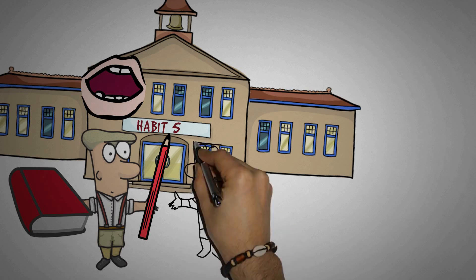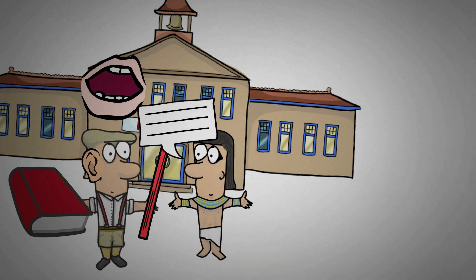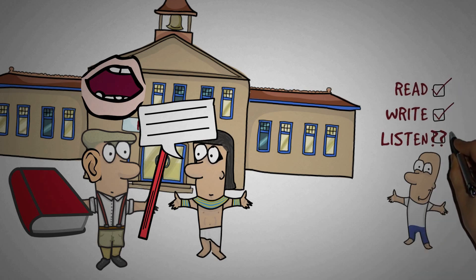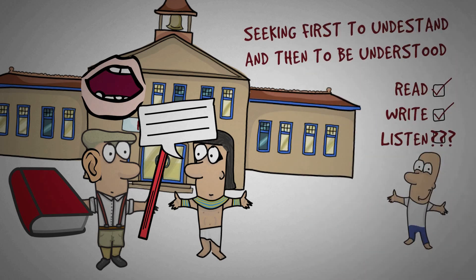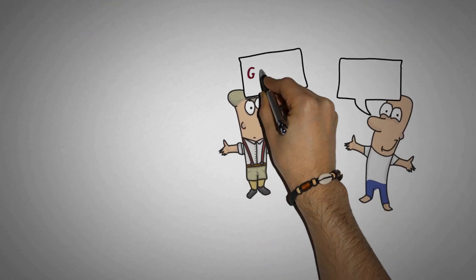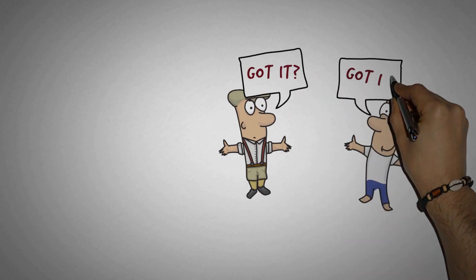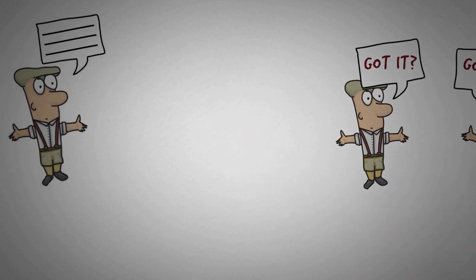But when in life did you learn anything about listening or understanding another person? Chances are you made it to adulthood without anyone teaching you the critically important skill of seeking first to understand, then to be understood. To communicate effectively, we first have to understand each other. The key is to first understand the other person.